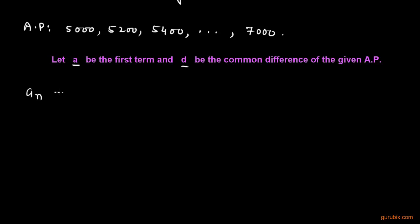We know that the general term of AP is a_n equals a plus (n minus 1) times d. We see that the first term is 5000 and the common difference is Rs. 200.